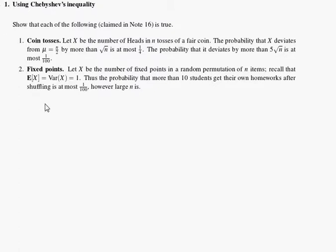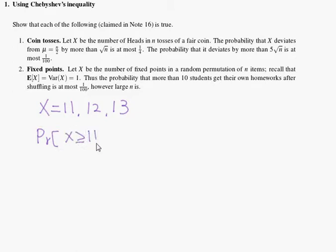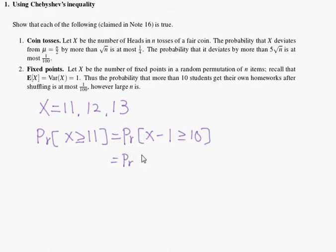Question 1.2. We want to find the probability that X is 11, 12, or 13. So the probability that X is greater or equal to 11 is the probability that X minus 1 is greater or equal to 10. Because X is non-negative, we can write this probability as the absolute value of X minus 1 is greater or equal to 10.